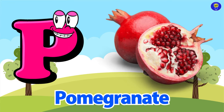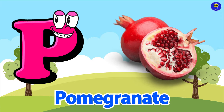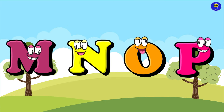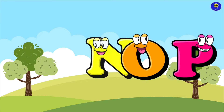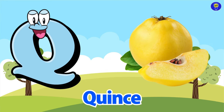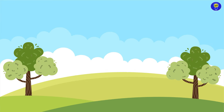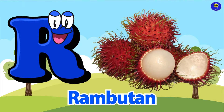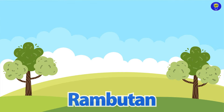P is for pomegranate. Puh, pomegranate. Q is for quince. Quh, quince. R is for rambutan. R, rambutan.